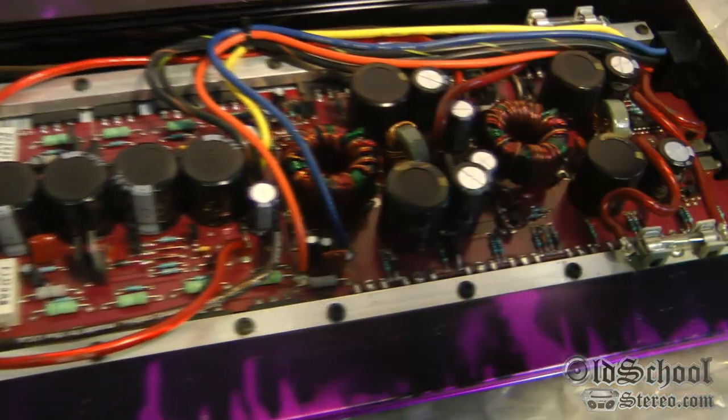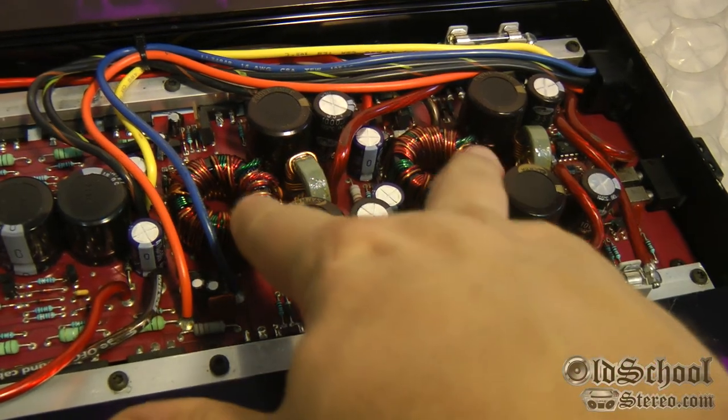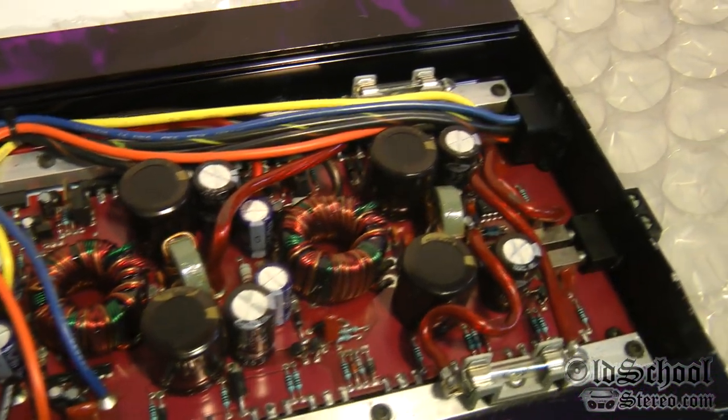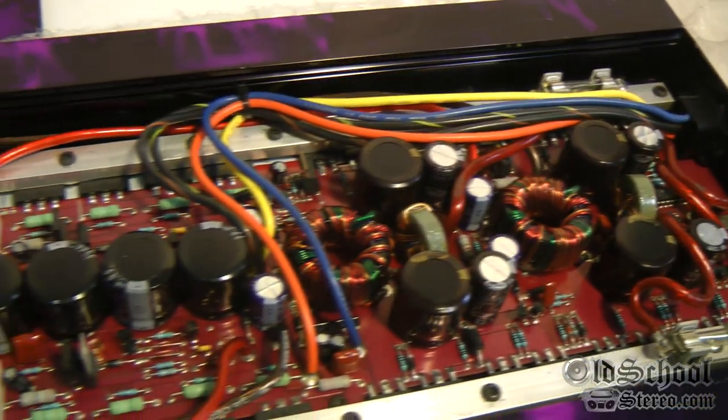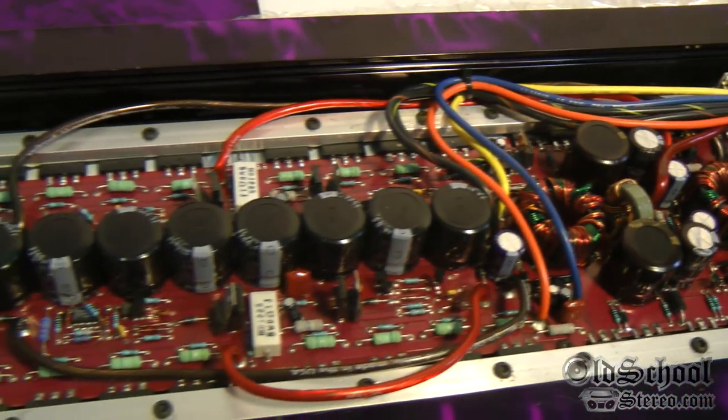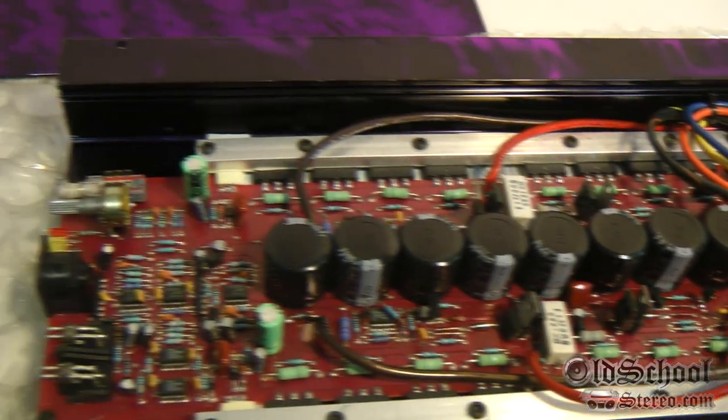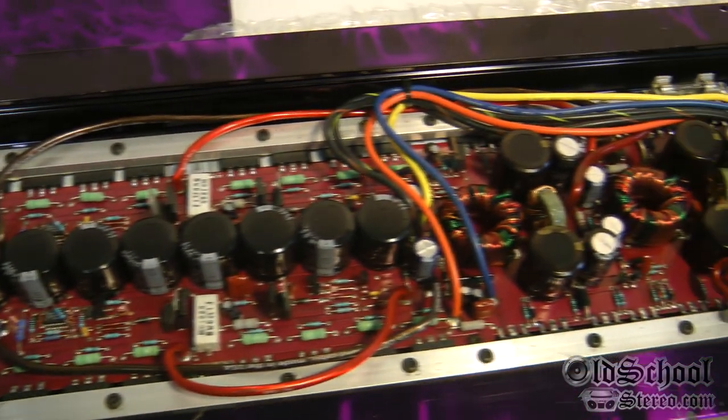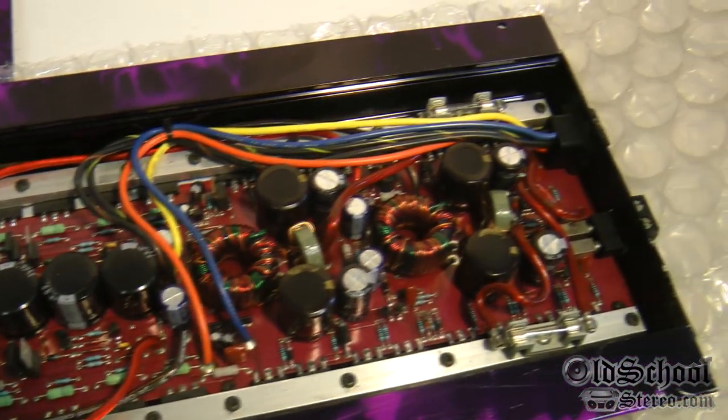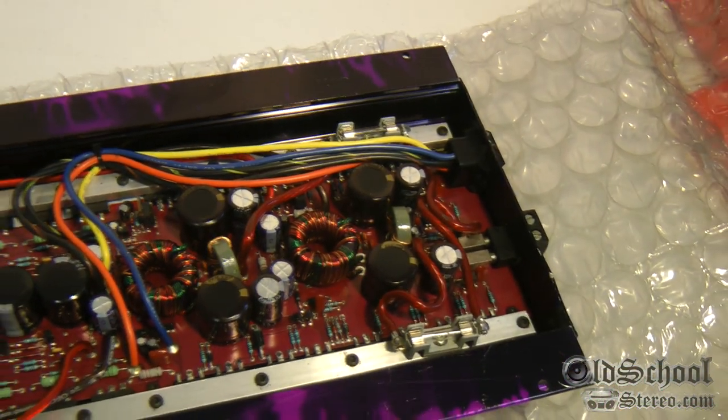Look at all of the capacitors here - 3,300 microfarad. We got the power supply capacitors here. Looks like it's a dual mono design. It's got dual toroids. Very, very, very nice. This amplifier is rated 100 watts by two in the forums and in the manual. It doesn't really say what it will do loaded down, but rumors are to do somewhere around 800 watts or so, maybe more.